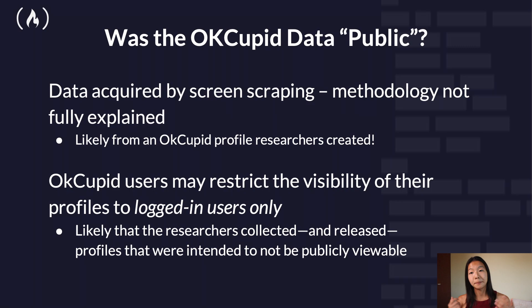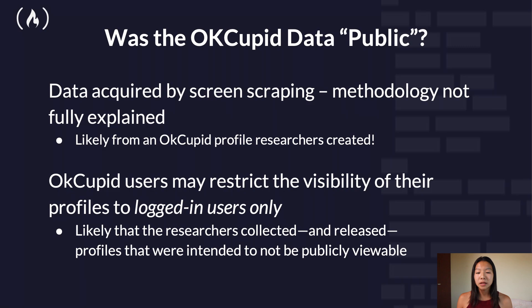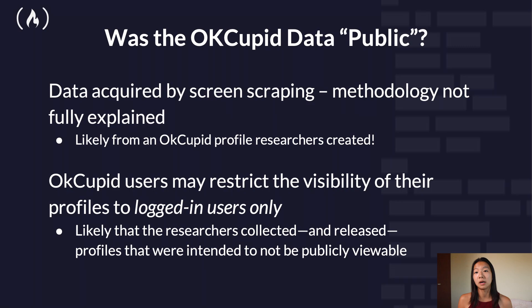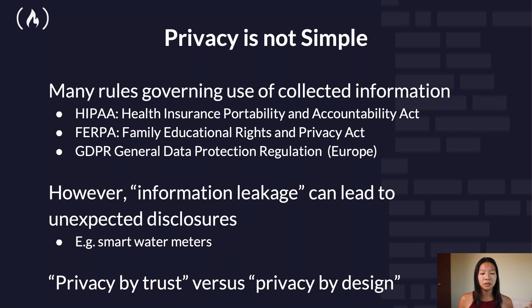But was this OkCupid data really public? The data was acquired by screen scraping, a methodology that's not fully explained, and it's likely from an OkCupid profile that researchers created. OkCupid users may also restrict the visibility of their profiles to logged-in users only, and it's likely the researchers collected and released profiles that were not intended to be publicly viewable. So privacy is not simple. There are many rules governing the use of collected information — for example, HIPAA, FERPA, and GDPR — but information leakage can lead to unexpected disclosures. There's also the idea of privacy by trust versus privacy by design.